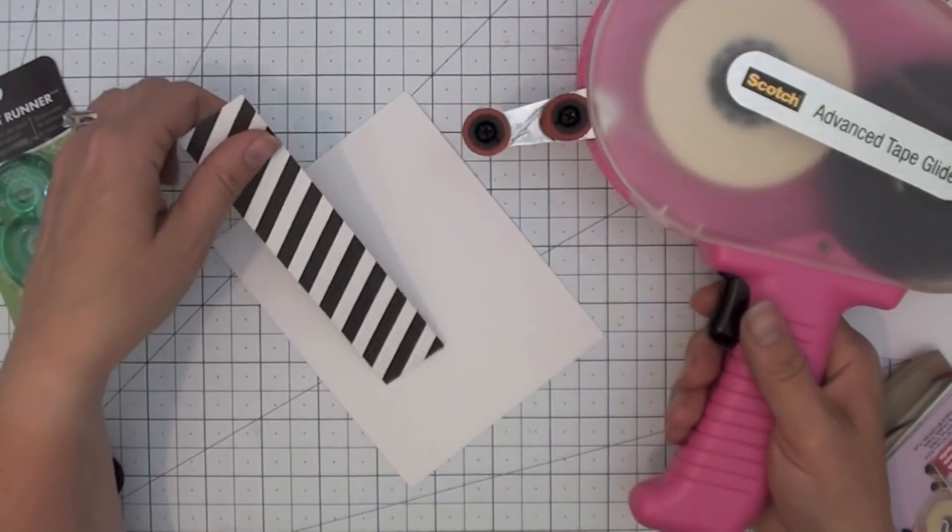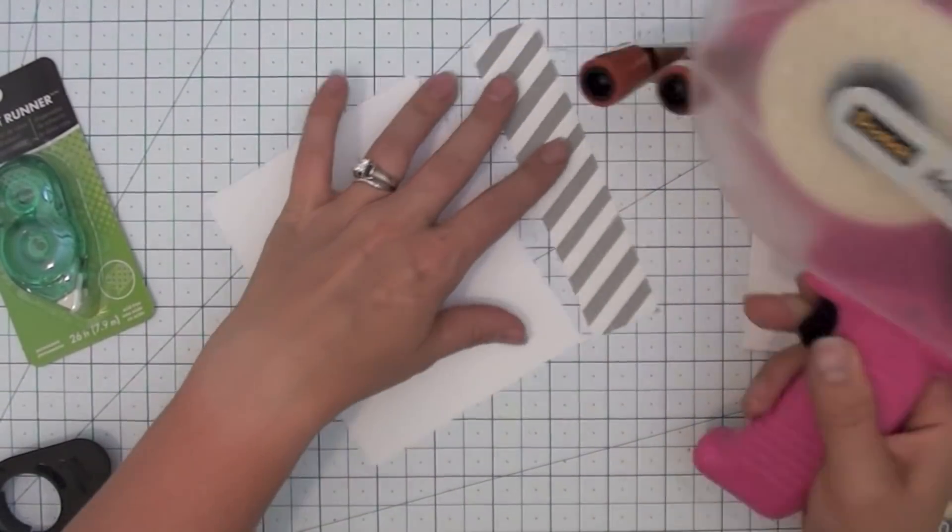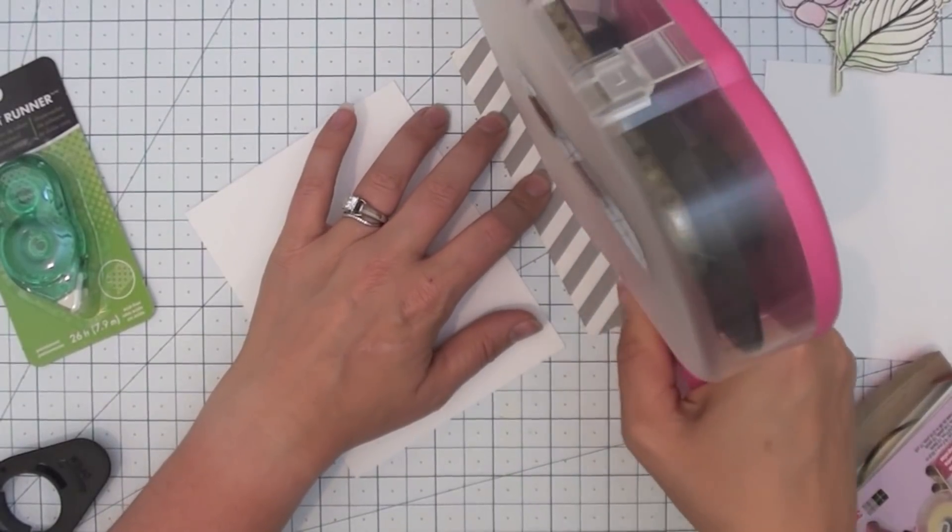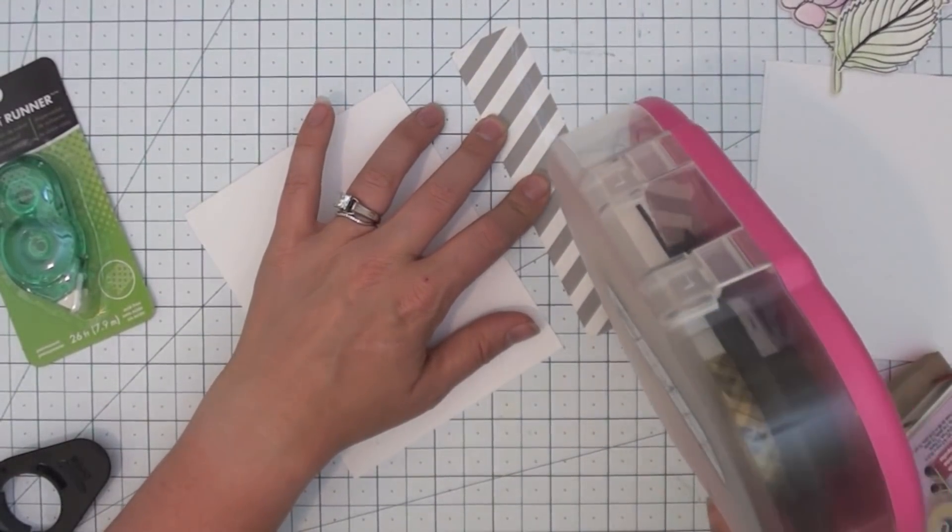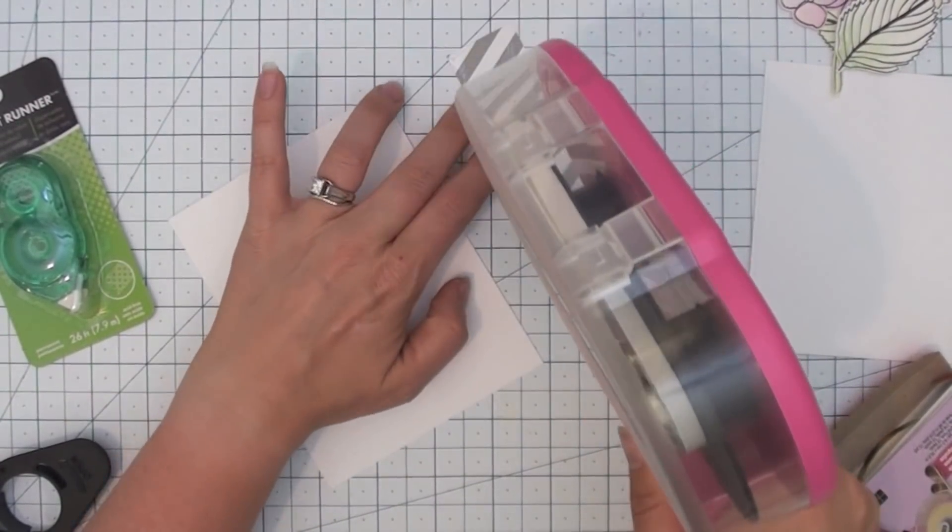This is the Advanced Tape Glider by Scotch. This thing is a mammoth and it holds loads of adhesive, which is great. It's also incredibly strong and pretty precise. It's easy to apply it exactly where you need it once you get the hang of it.